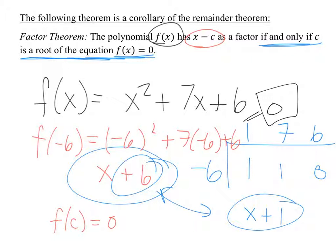Remember, when you can factor a function — say f(x) = (x+1)(x+6) — that gives you the x-intercepts. With quadratics, if you factor x plus 1 and x plus 6, the roots are negative 1 and negative 6. Those roots are really x-intercepts. So synthetic substitution helps us in real time: whenever you get a row with 0 at the end, you know that value must be a root.